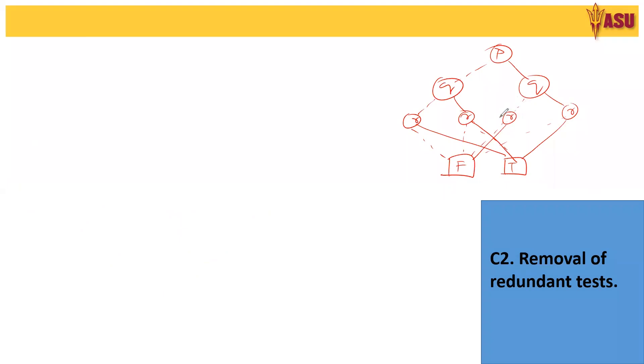There is one node for which both true and false go to false, that is this. So we can get rid of this r. That will give rise to